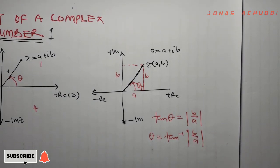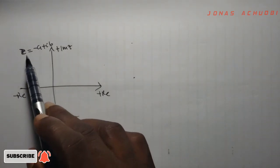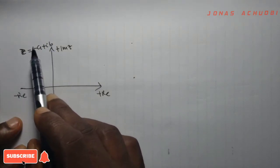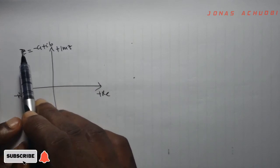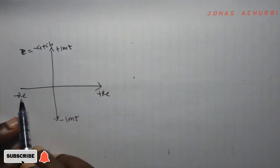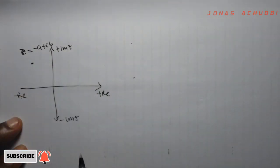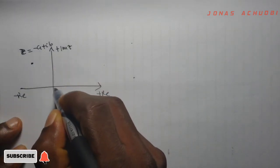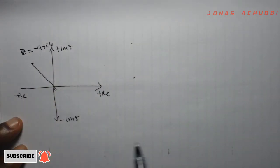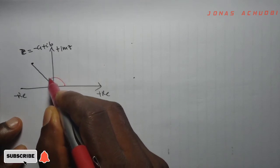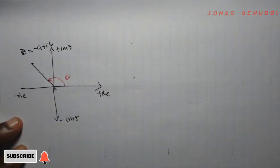We now proceed to see what happens in the second quadrant. We consider the complex number z equal to negative a plus ib. This complex number is located in the second quadrant because the real part is negative and the imaginary part is positive. The argument theta is the angle that the complex number makes with the positive real axis.